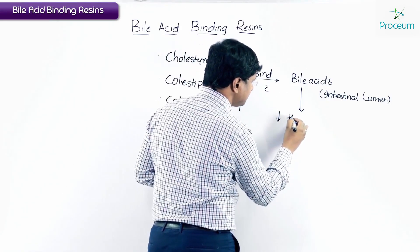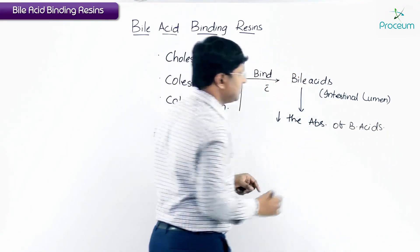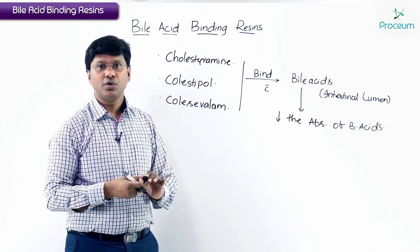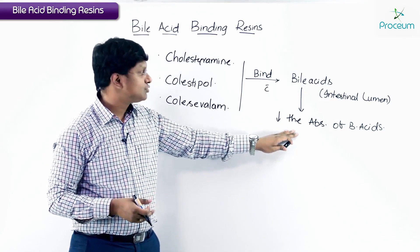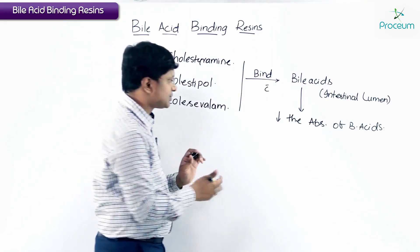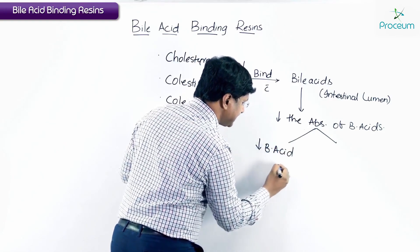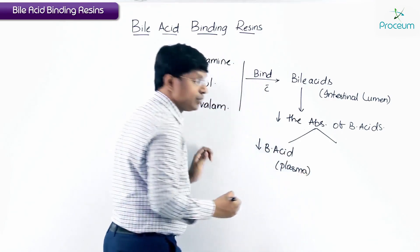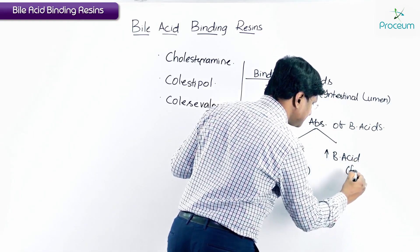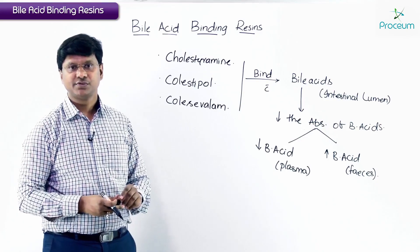Once they bind with the bile acids present within the intestinal lumen, these drugs decrease the absorption of bile acids. As a result, the bile acid content in the plasma will be reduced, and there is increased bile acid excretion in the feces.